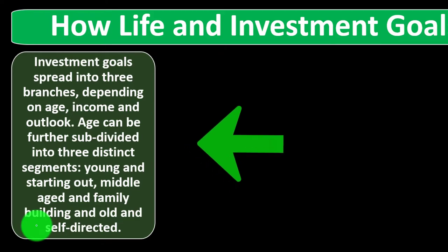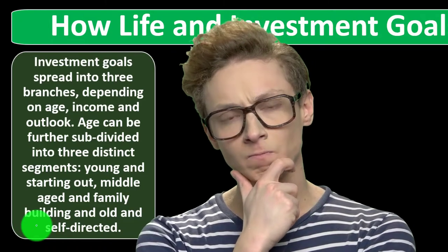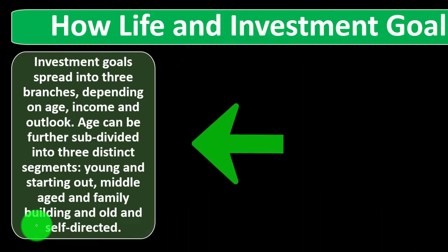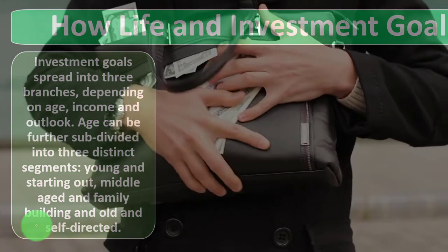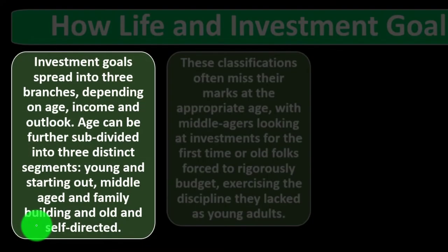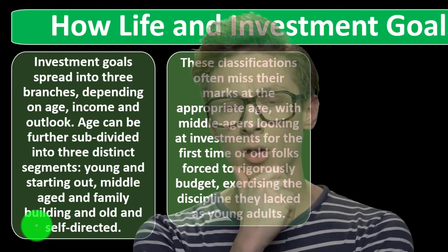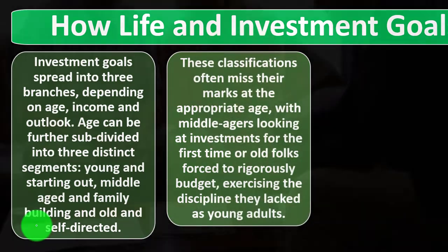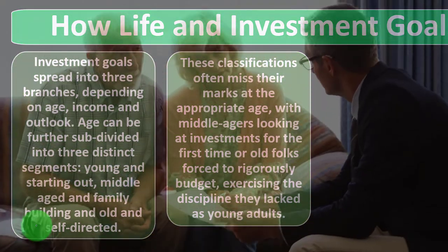Investment goals spread into three branches depending on age, income, and outlook. Age can be further subdivided into three distinct segments: young and starting out, middle-aged and family building, and old and self-directed. Typically you're going to have different relationships with money, savings, and debt depending on where you are in the life cycle, though of course there can be changes for people outside the norm.